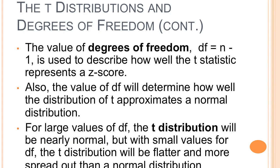The value of the degrees of freedom, df, is always n minus 1 with the one-sample t-test. It will determine how well the distribution of t approximates a normal distribution. For large values, the t-distribution will be nearly normal. But with very small values, it will be flatter and more spread out than a normal distribution.